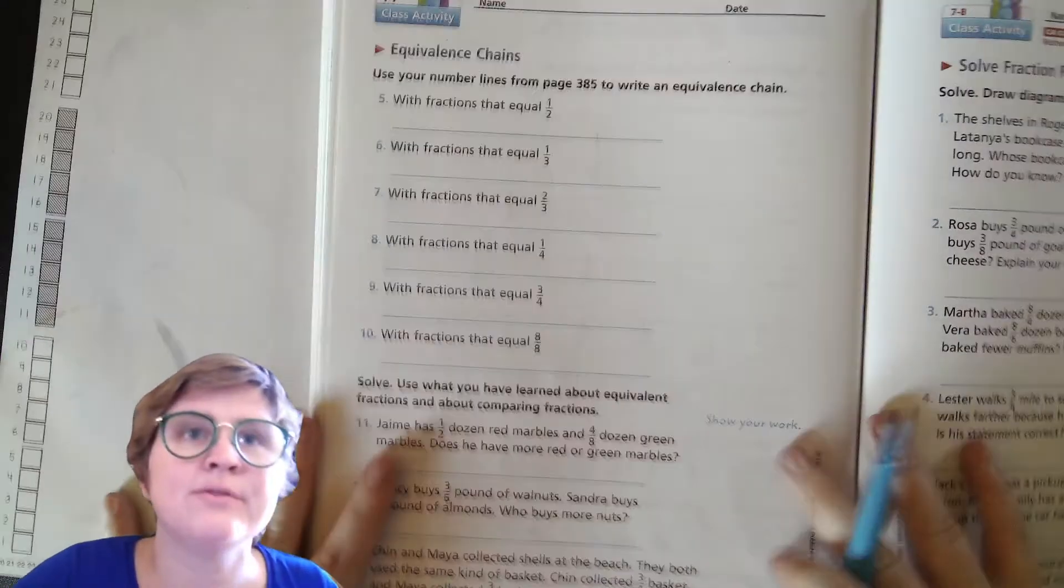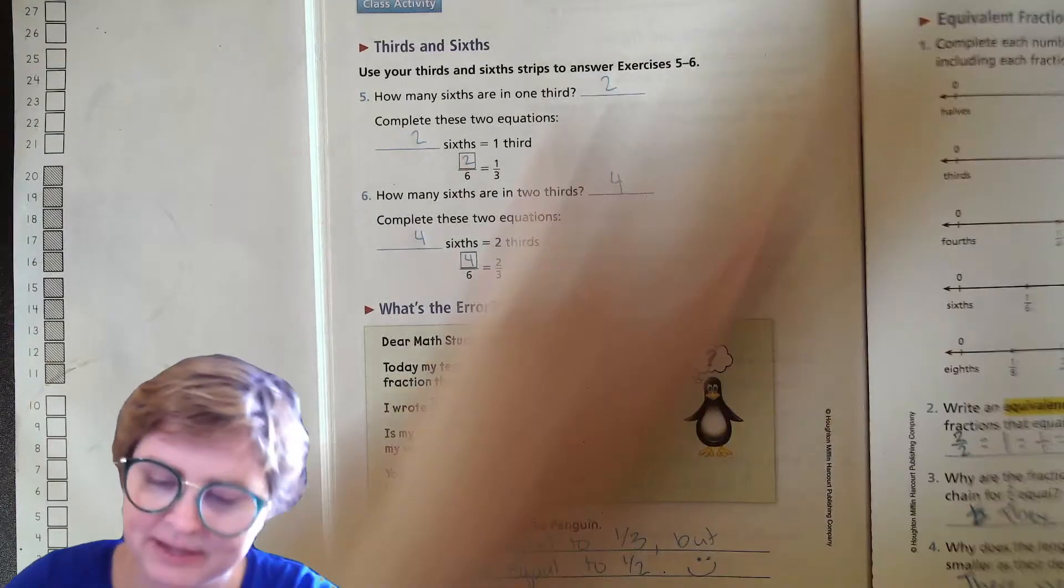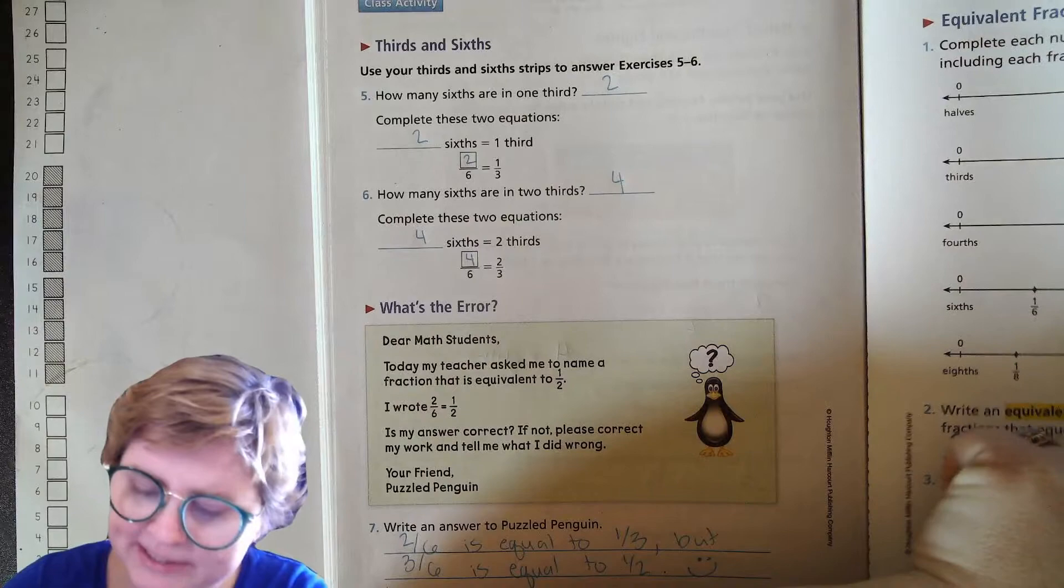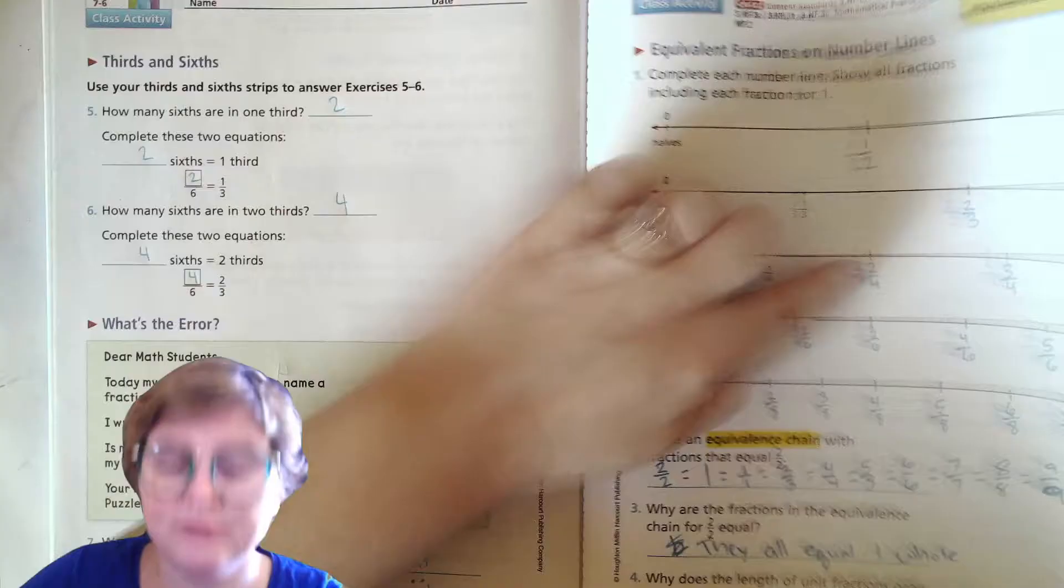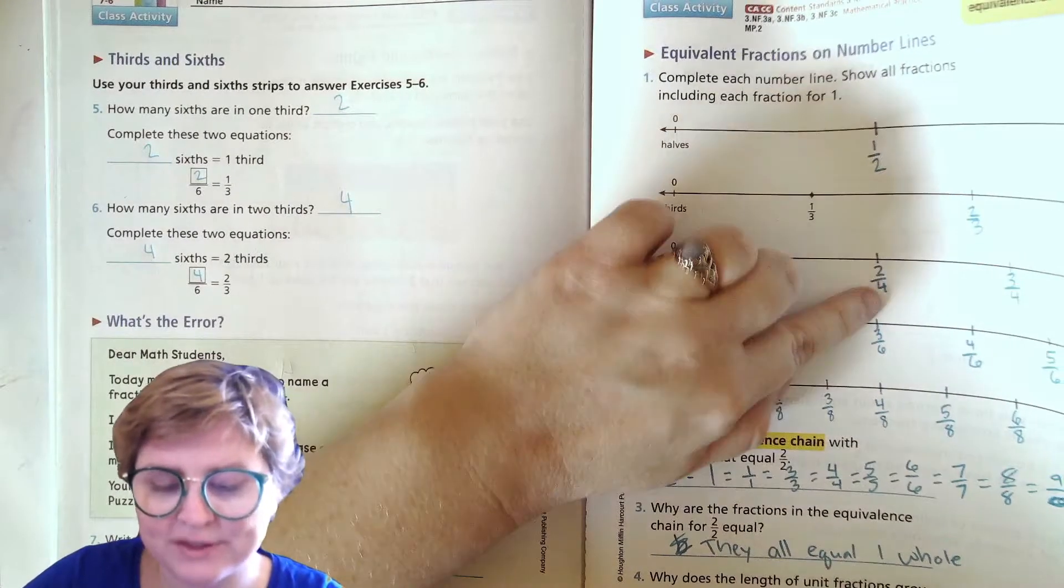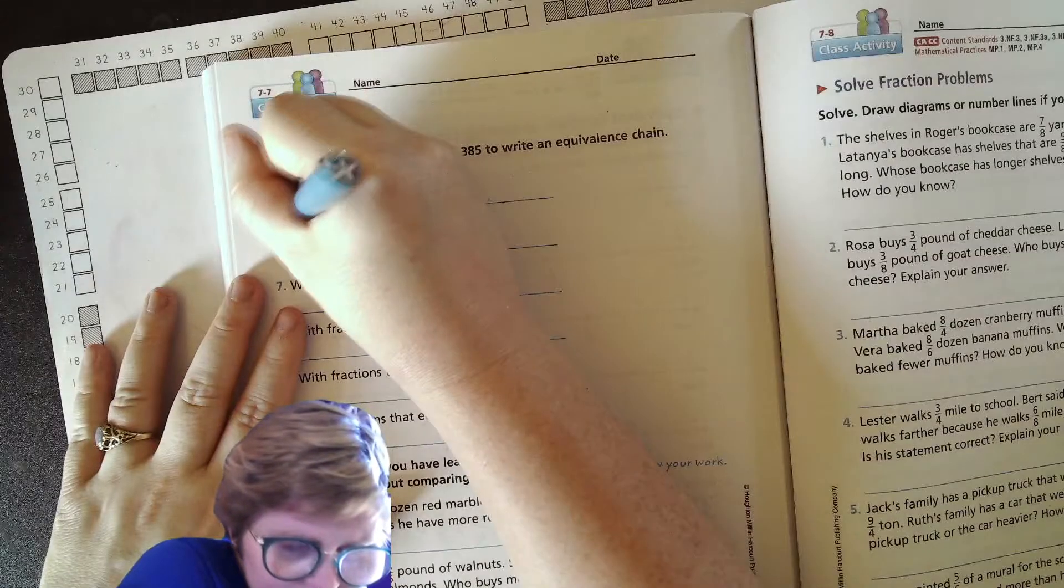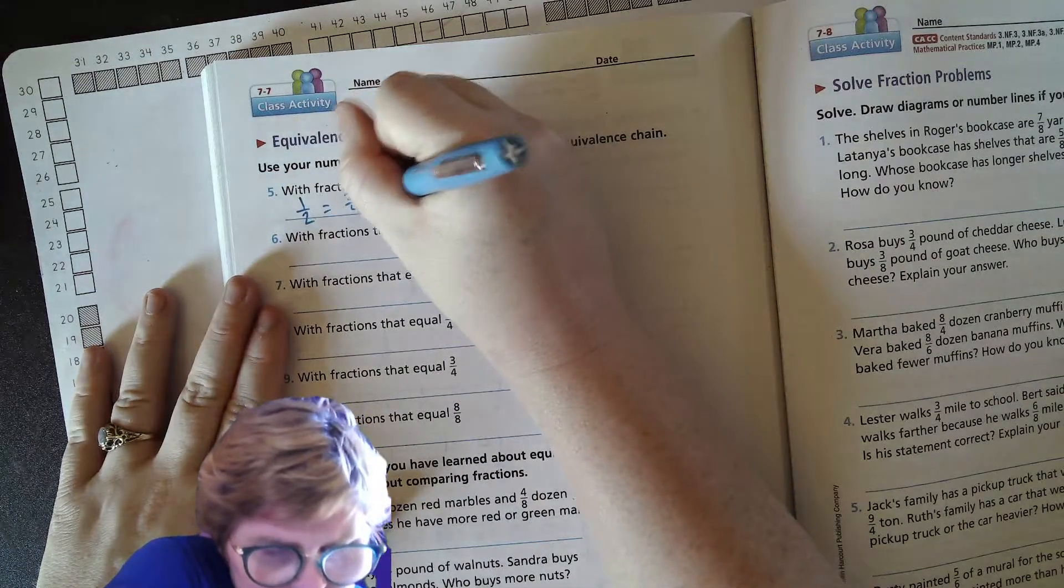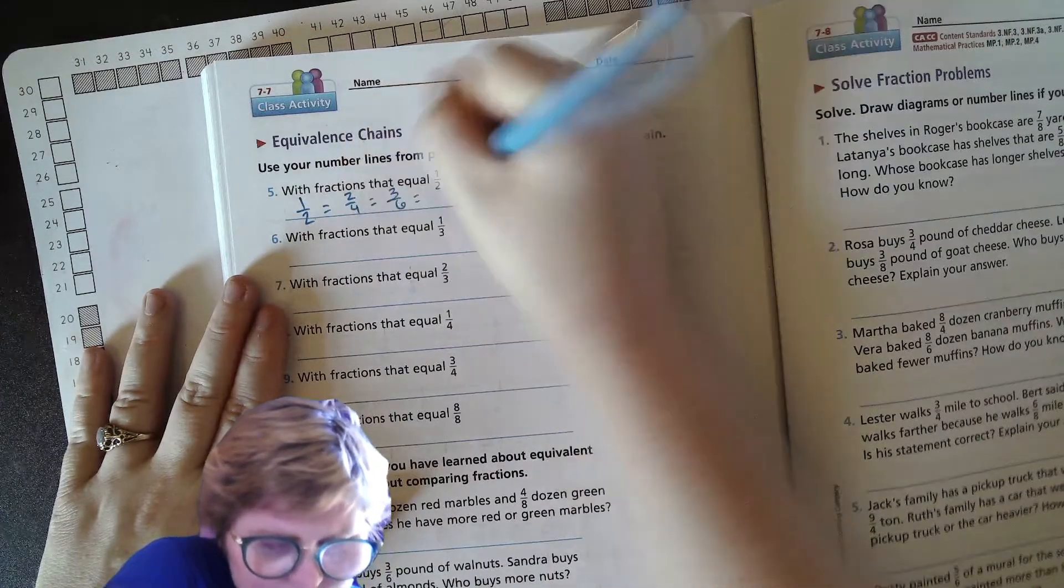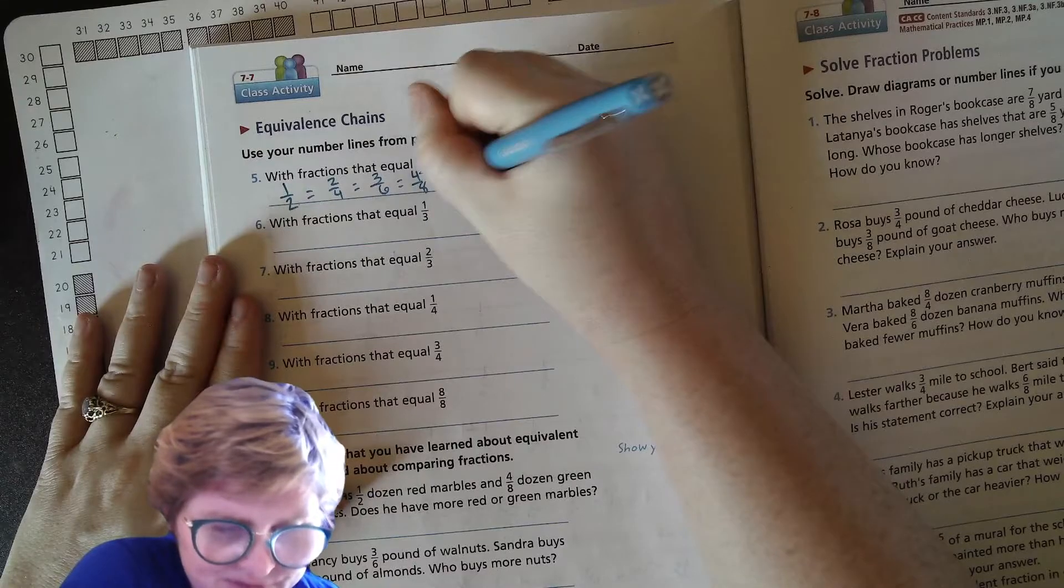Okay, now moving on to the other side of the page. It wants us to write fractions that equal one half. So equal to one half, we have two-fourths, three-sixths, and four-eighths. And basically for all of these, the numerator is half of what the denominator is - that's why it's equal to one half. So one half equals two-fourths equals three-sixths equals four-eighths. Could you guess how many hundredths? What's half of a hundred? Fifty. So fifty-hundredths or 100 over 200.